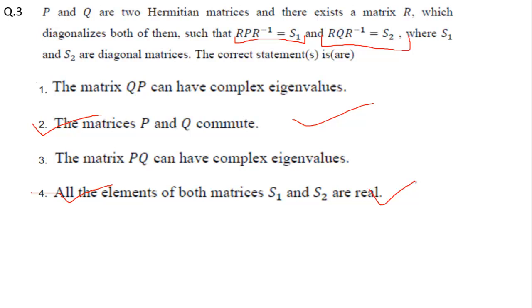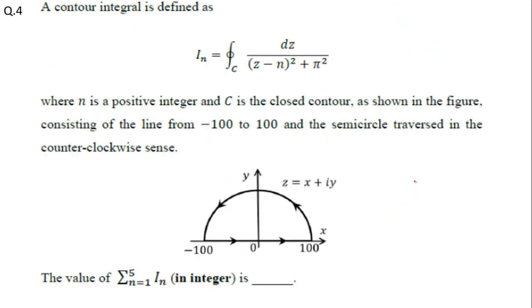In mathematical physics, MSQ type questions were more common. Every concept had one question. There were four questions total. The fourth question was from the complex portion, contour integral. The contour integral is defined as I_n = ∮_C dz/(z-n)² + π², where n is a positive integer and C is the closed contour as shown in the figure.